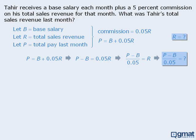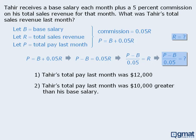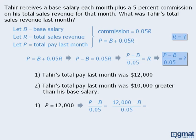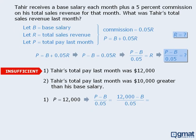Now let's examine the two statements. Statement 1 tells us that Tahir's total pay last month was $12,000 — in other words, P equals 12,000. Does this provide enough information to find the value of our rephrased target question? If we replace P with 12,000, we can see that we still need to find the value of B in order to evaluate this. So statement 1 must be insufficient.